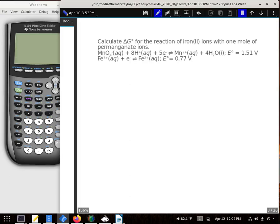Calculate the delta G for the reaction of iron two ions with one mole of permanganate ions. So we have our two equations.